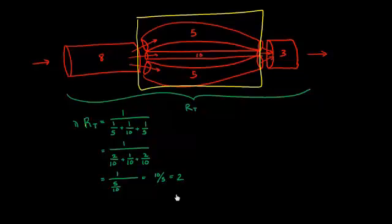So that tells me that the resistance in this middle yellow box is 2. And that makes sense with our rule, because we said that when things are in parallel, the total resistance is going to be less than any component. And in fact, 2 is less than 5, 10, and 5, right? It's less than any of those numbers individually.